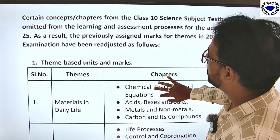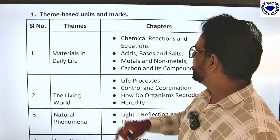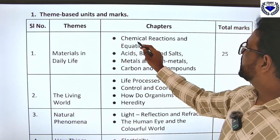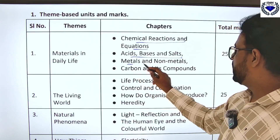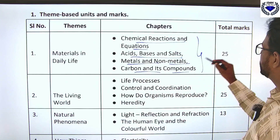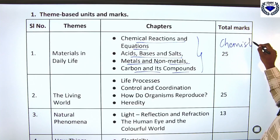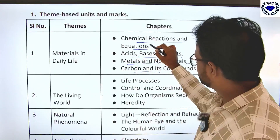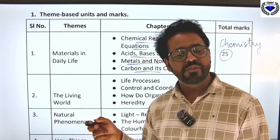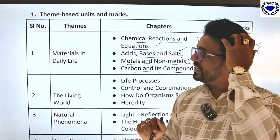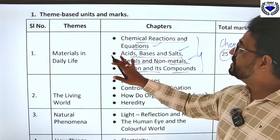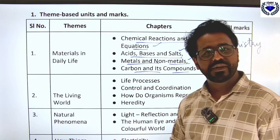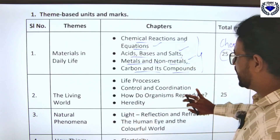Looking at theme-based units and marks — under 'Materials in Daily Life,' you have chemical reactions and equations, acids bases and salts, metals and non-metals, and carbon compounds. This total is chemistry, and chemistry carries 25 marks. We will get into the chapter-wise breakdown showing how many one-mark, two-mark, and three-mark questions to expect from each chapter.